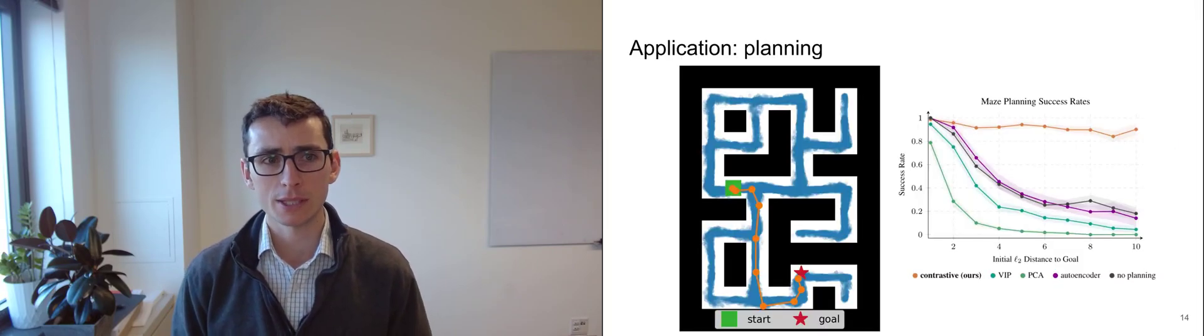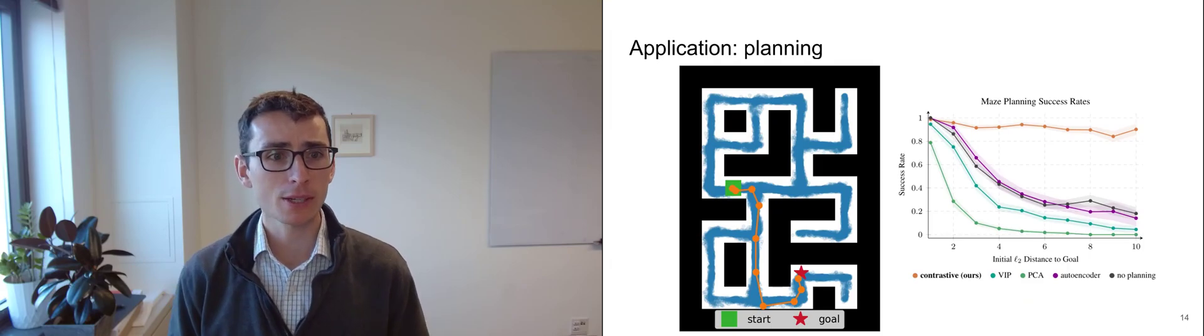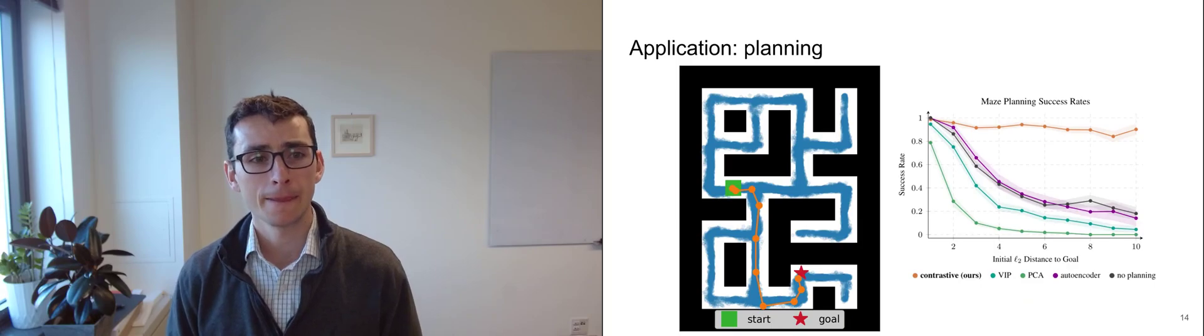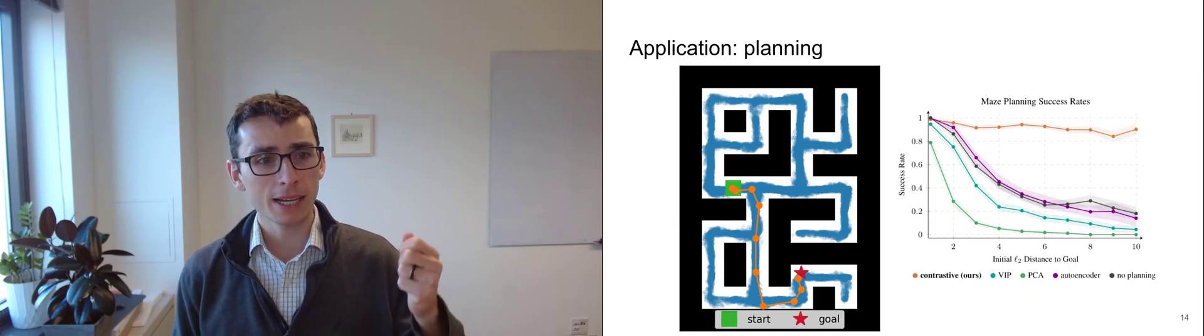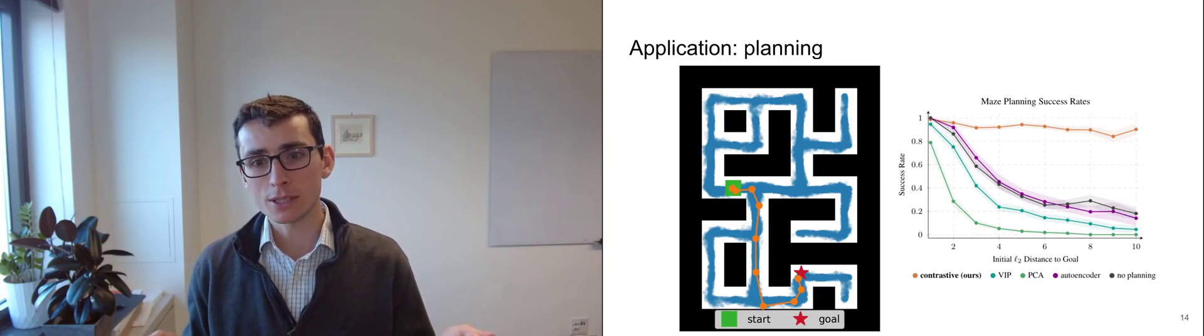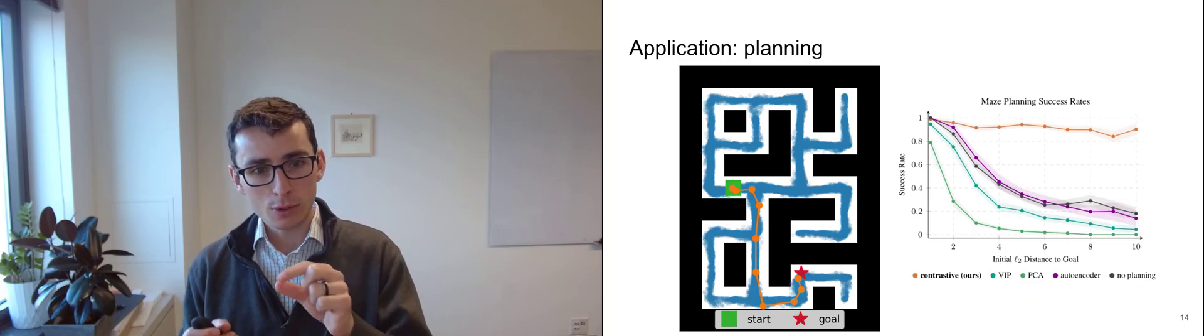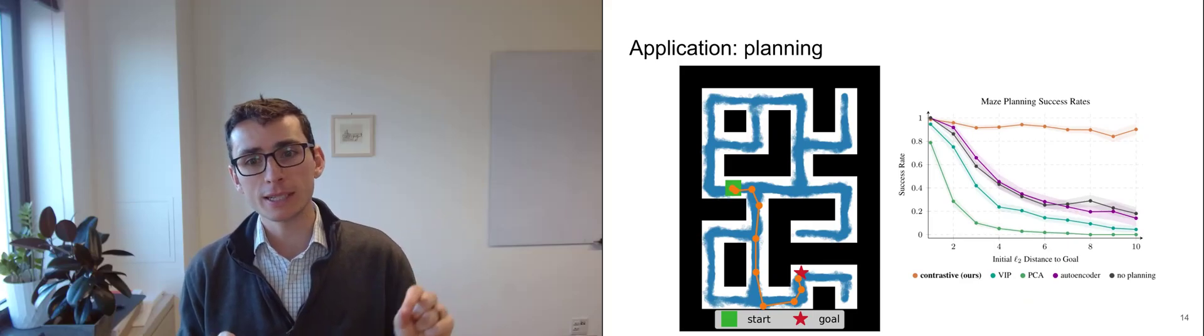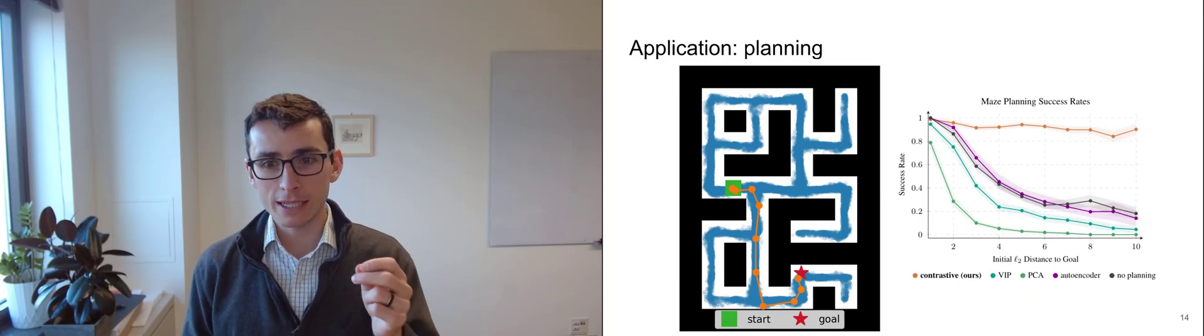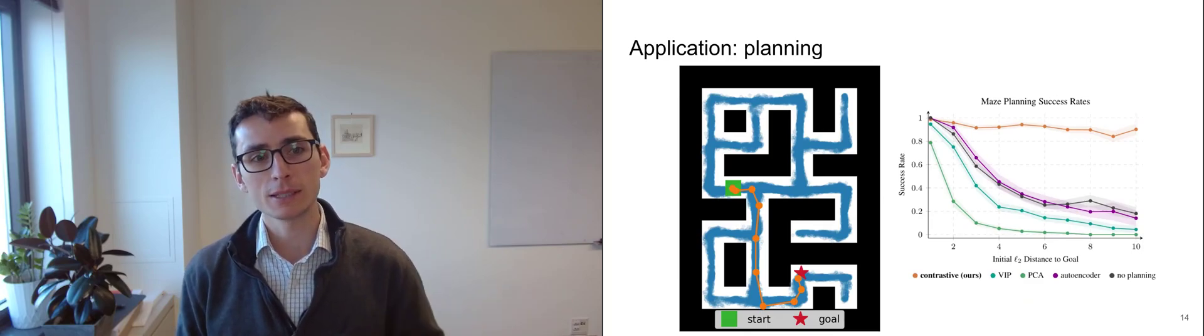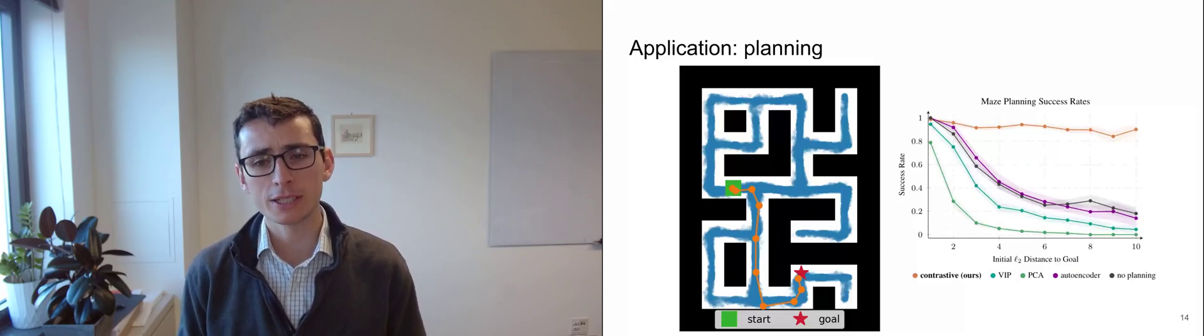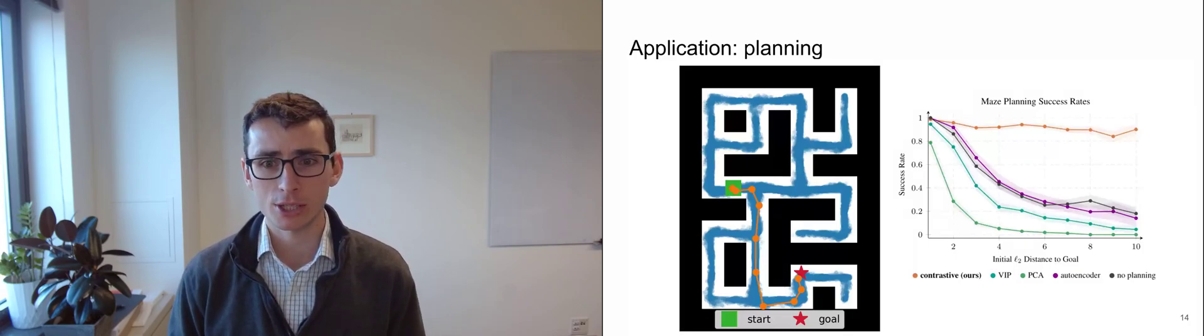Another application of our theoretical results is to planning. Let's say you want to solve this maze shown on the left, and you have lots of data of an agent wandering through this maze. Our results say that you can simply take a representation of the initial state and a representation of the goal state, and then use our results, invert a low dimensional matrix, to infer what the representations of all these intermediate states are. After you've found these intermediate states, you can use them for planning, laying down a string of breadcrumbs leading to the goal. And empirically, this leads to much higher success rates for navigation, especially on the most challenging navigation tasks.